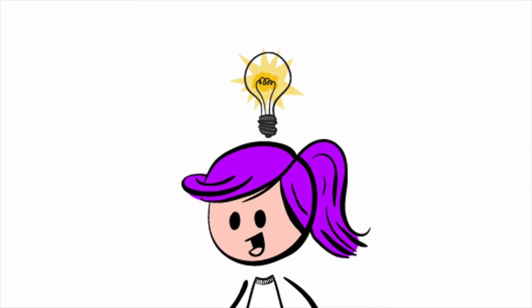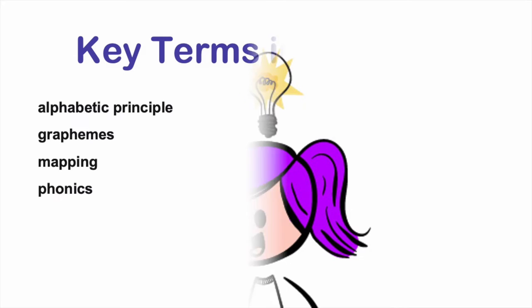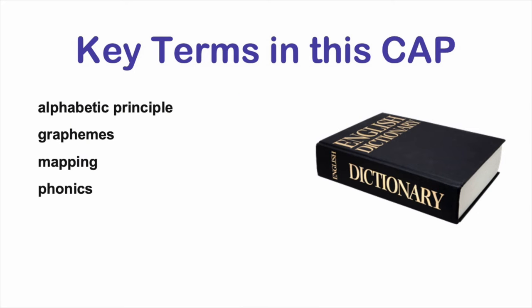Now that we've finished our review, let's go over some new information. The terms that we'll define are alphabetic principle, graphemes, mapping, and phonics.